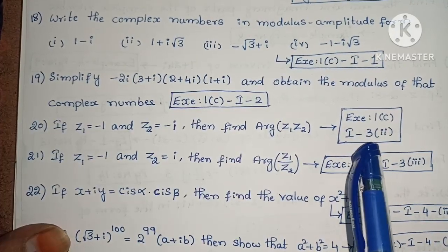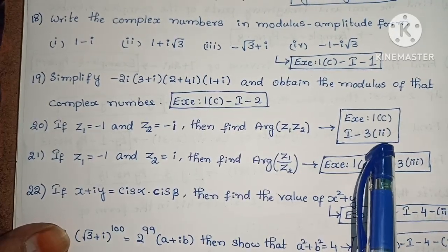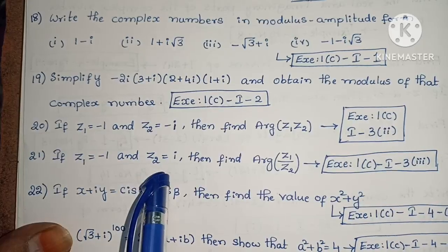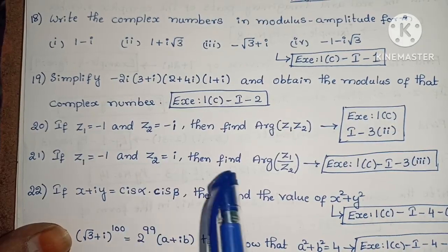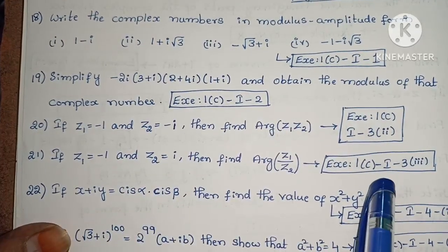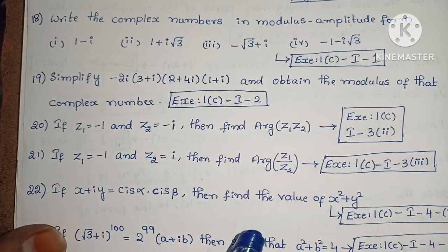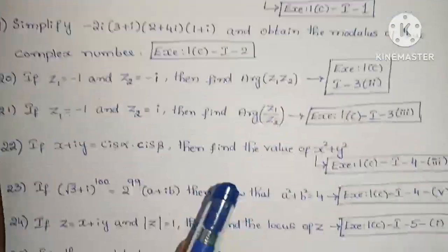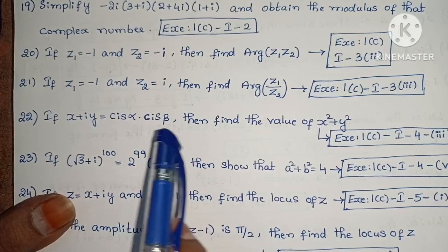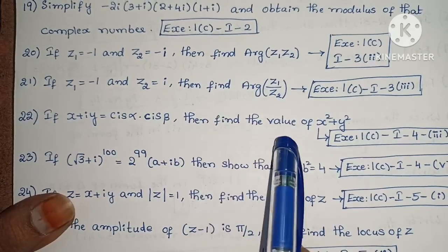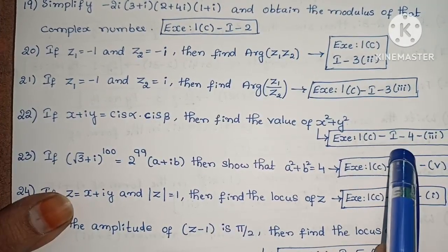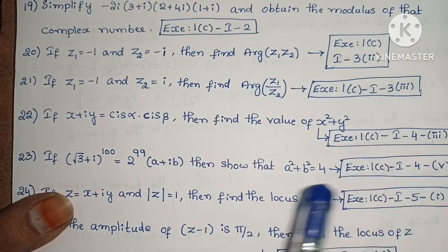Next, if z1 equals minus 1 and z2 equals i, find arg(z1 / z2). Exercise 1c, first roman, third, third one. Next, if x plus iy equals cis(alpha) · cis(beta), then find the value of x squared plus y squared. Exercise 1c, first roman, fourth, third one.